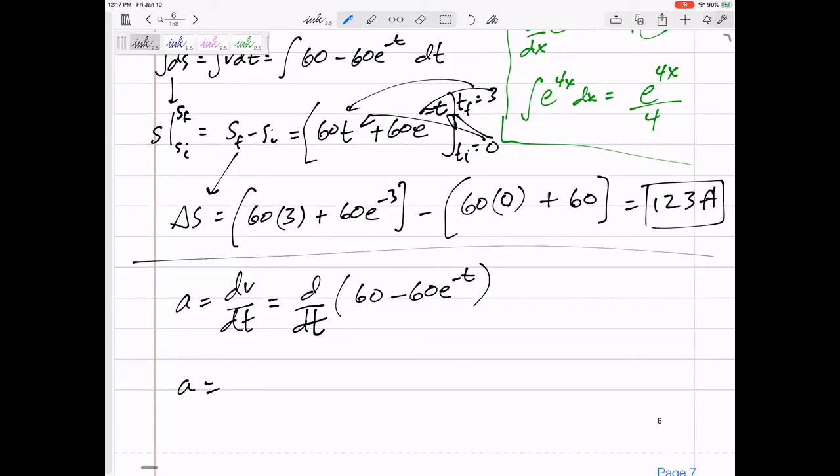But the derivative of negative 60e to the negative t times negative 1. Right. So, we could just put positive 60e to the negative t. So, there's my equation for acceleration. 60e to the negative t. That's my equation for acceleration.